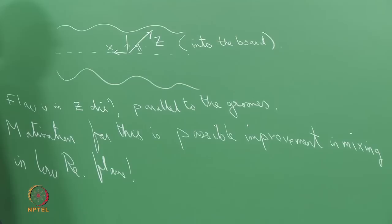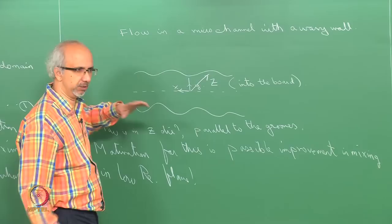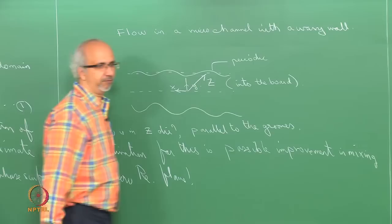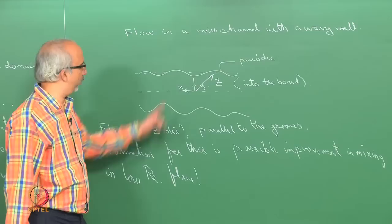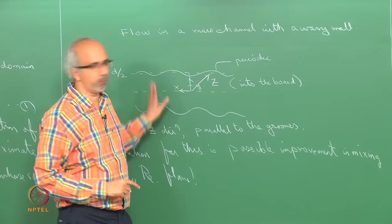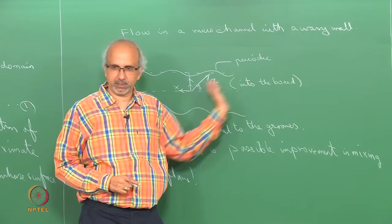Now, to explain what is happening here: how would I define the wall? These are my rigid walls. Since this is periodic, the first trigonometric function that comes to mind is sine. I am going to say the mean value is at a distance of y equals d/2. So the actual surface is y equals (d/2)(1 + ε sin(2πx/L)), where L is the wavelength in the x direction of this periodicity.